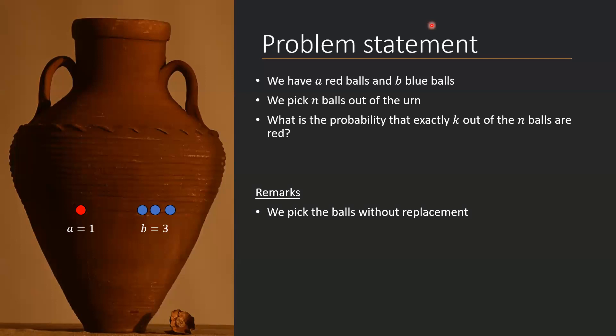Let's make some remarks. First of all, we pick the balls without replacement. What this means is that every time a ball is taken out, we don't replace it with a new ball, so each time we pick a ball the number of balls in the urn decreases. As a consequence, n has to be smaller than A plus B, because A plus B is the total number of balls and we cannot take out more balls than are already present in the urn.